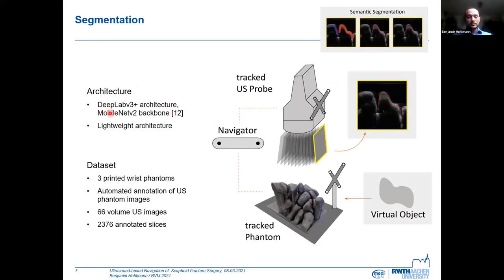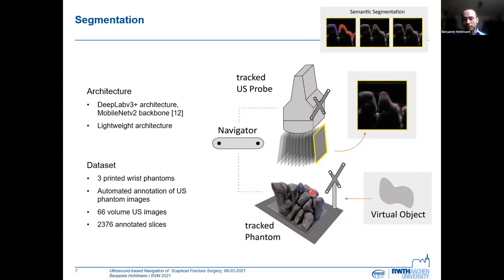For segmentation, we opted for the DeepLab version 3+ architecture with the MobileNet version 2 backbone. This is a lightweight, low-capacity architecture, and we needed training data for that. We 3D printed some of the models from Moore et al., and as we have the CAD data available and also an optical tracking system for our phantom body and the ultrasound probe, we can transfer the surface of the scaphoid into the volume image and by that automatically annotate the volume images. We recorded 66 volumes, which is roughly two and a half thousand slices.